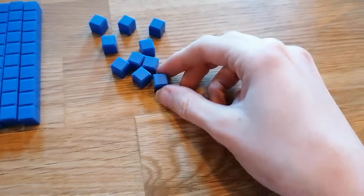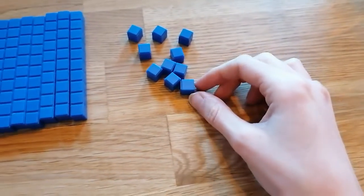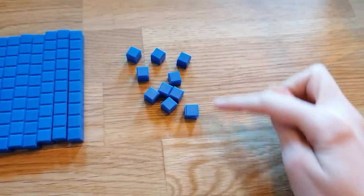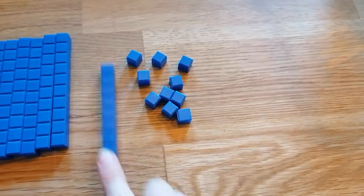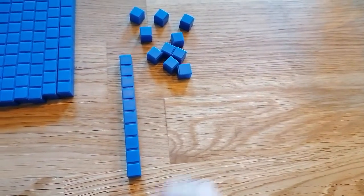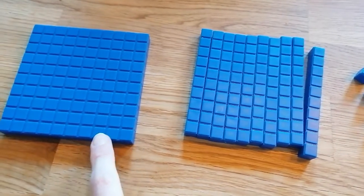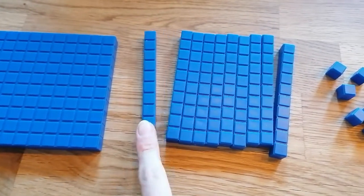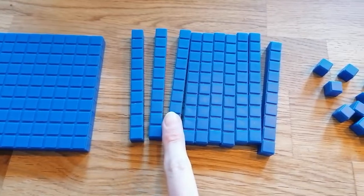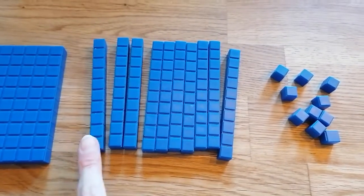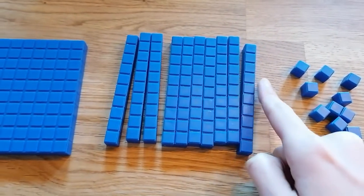These just count as one and the children know that ten ones make one ten stick as well. Now in a hundred square there are one hundred ones but there are also ten groups of ten ones, so ten individual sticks which together make a hundred.